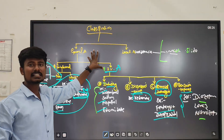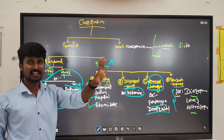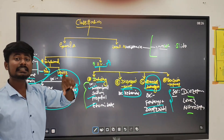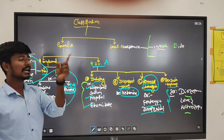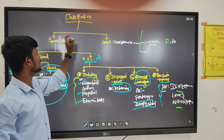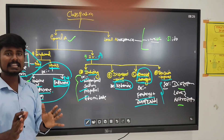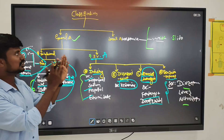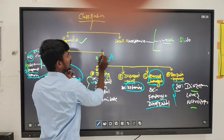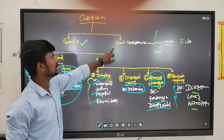For exam questions asking to define and classify anesthesia, write the definition of anesthesia first, then the classification of general and local anesthesia. If they ask you to explain side effects and indications of general anesthesia, start with the definition of general anesthesia, then classification.